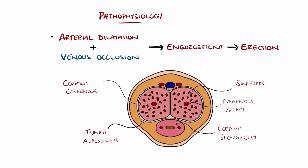Blood enters the penis via the internal pudendal artery, which ultimately further branches into cavernous arteries, filling sinusoids, which then also compress the venous outflow, which drains via the deep and superficial dorsal veins.